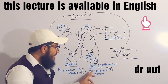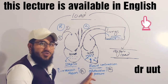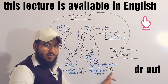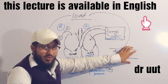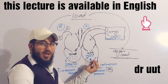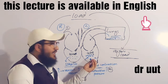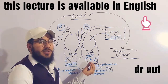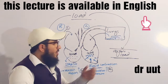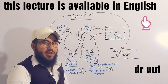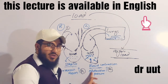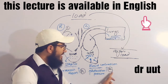Increased arterial constriction causes an increase in afterload. If arterial constriction decreases, then afterload will be less, and ventricular contraction will increase. You can say that increased arterial constriction will increase the afterload, and decreased arterial constriction will decrease the afterload.